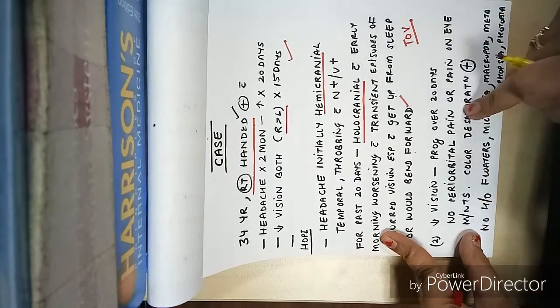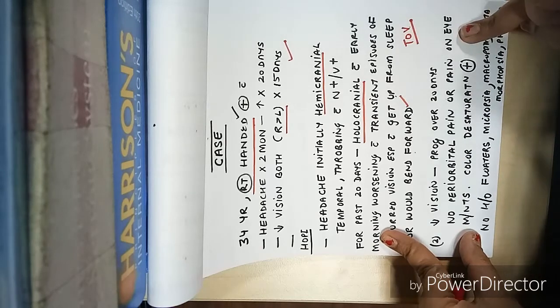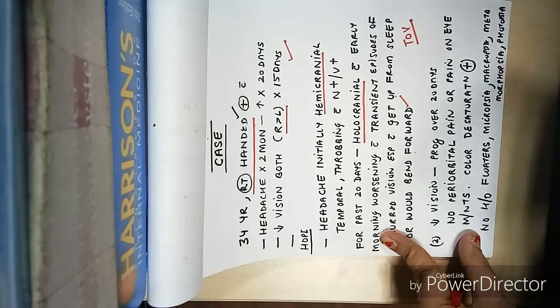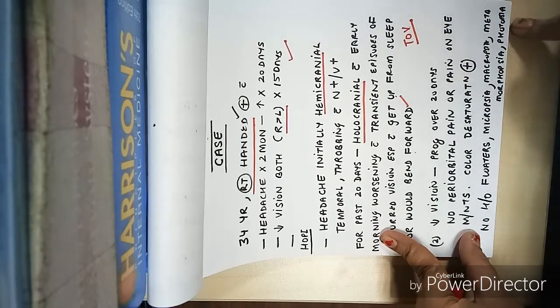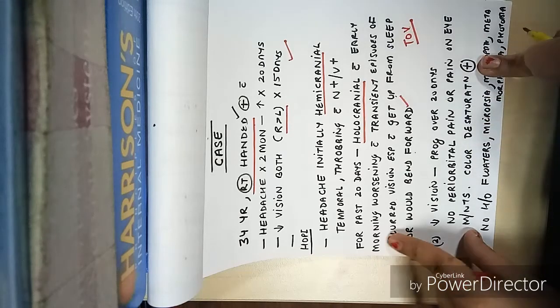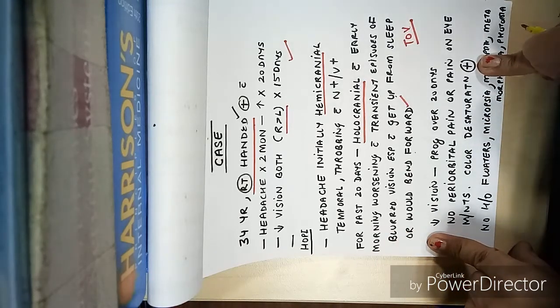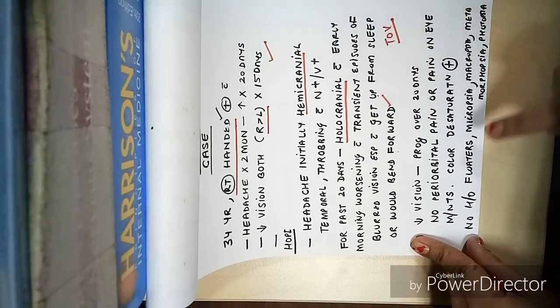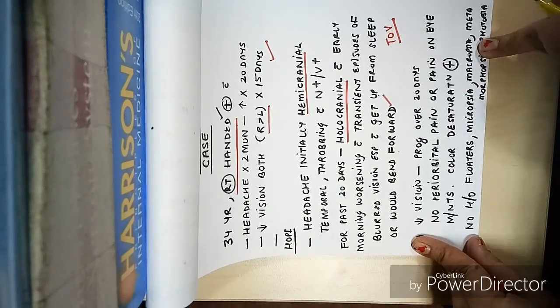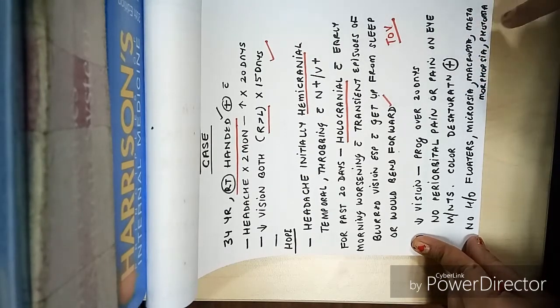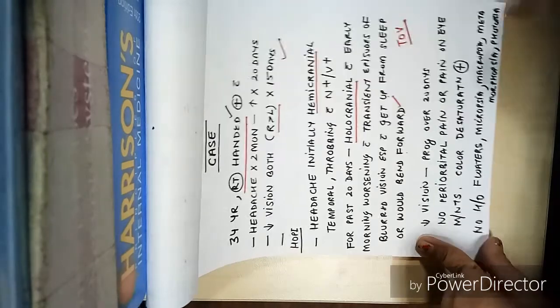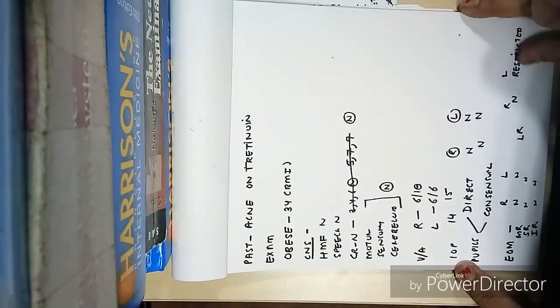What is important is negative history. There was no periorbital pain or pain on eye movements, so we have ruled out optic neuritis. Color desaturation was present. There is no history of floaters, micropsia, macropsia, metamorphopsia, and photophobia.